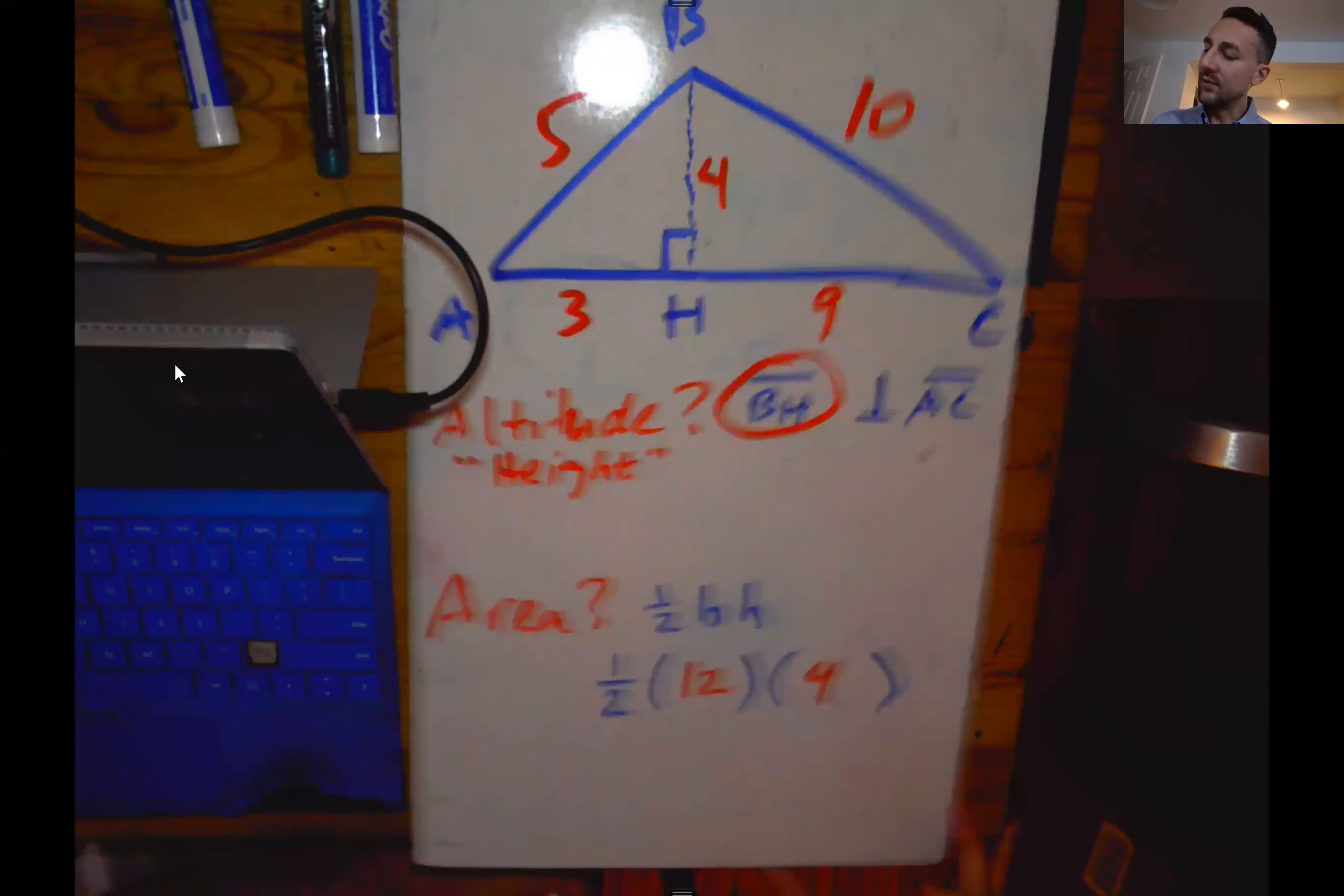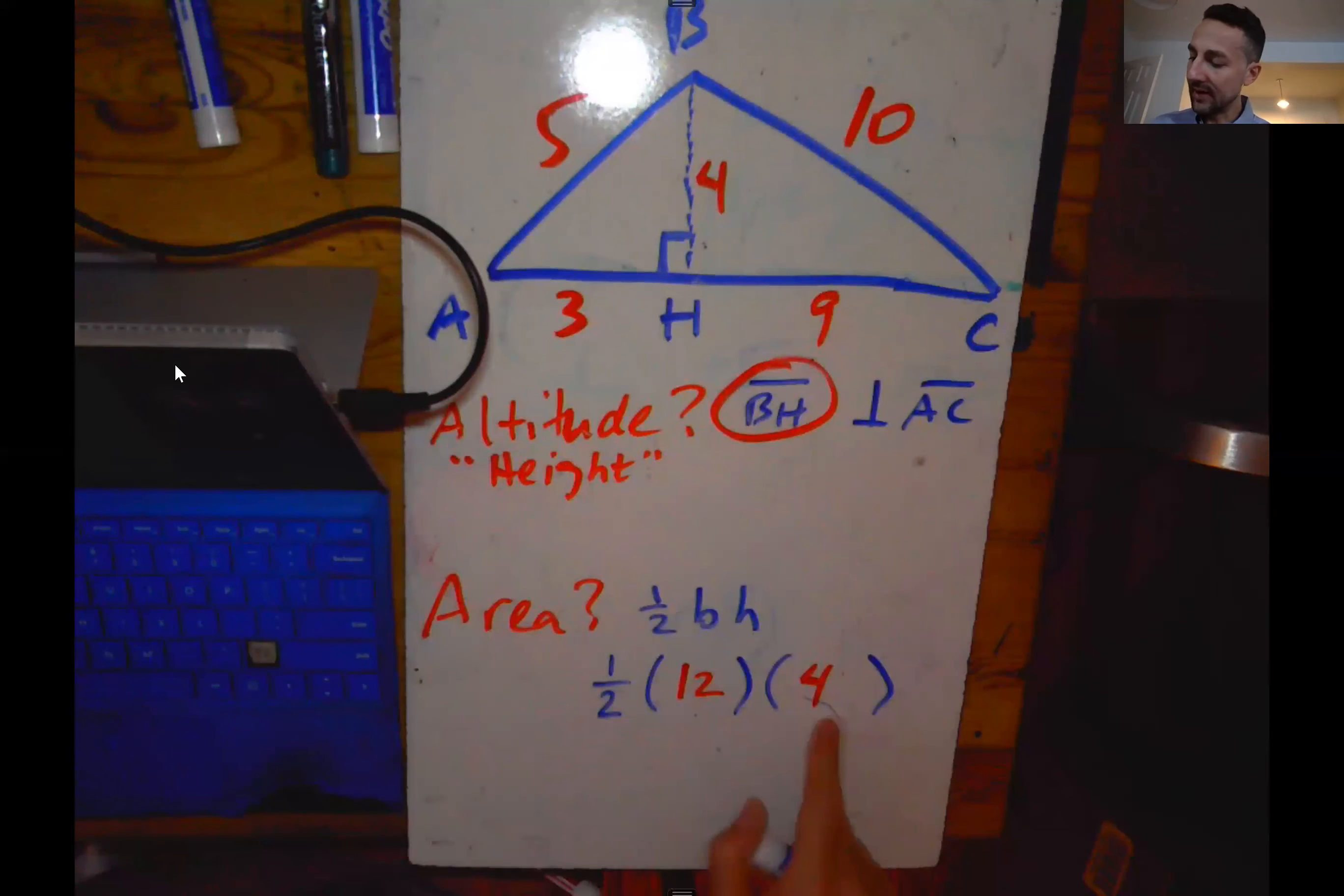So 12 times 4 is 48. So we're looking at one-half of 48, and then one-half times 48 is 24.